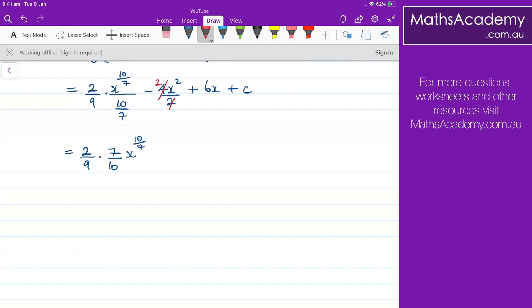The 4 and the 2 here will cancel, leaving me with a 2, so I've got minus 2x squared plus the 6x plus the constant of integration.